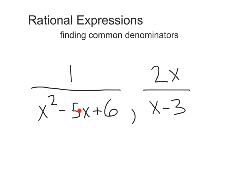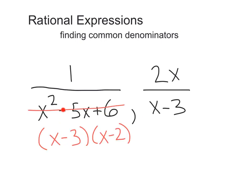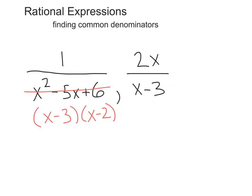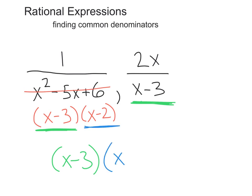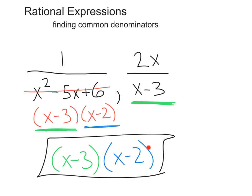For the last one, our denominators are x squared minus five x plus six and x minus three. Before we proceed, x squared minus five x plus six looks like it can be factored — and factoring usually makes these things a lot easier. Factoring gives us (x minus three)(x minus two). Now, we already have an x minus three from the second denominator, and since those are exactly the same, one x minus three accounts for both. We still need to take care of x minus two, so we add that in. Our common denominator is (x minus three)(x minus two).